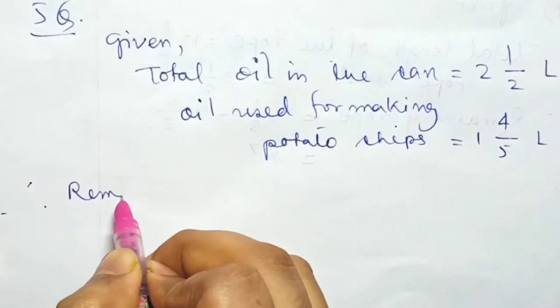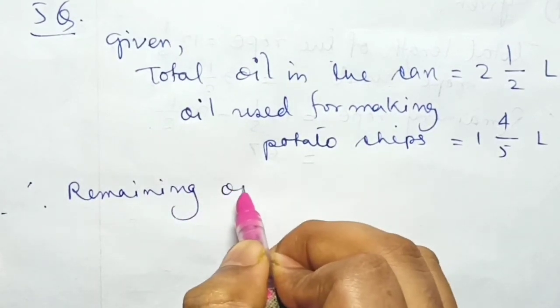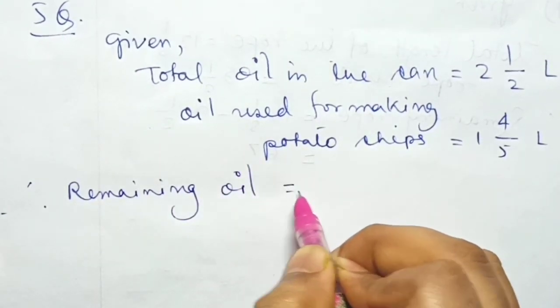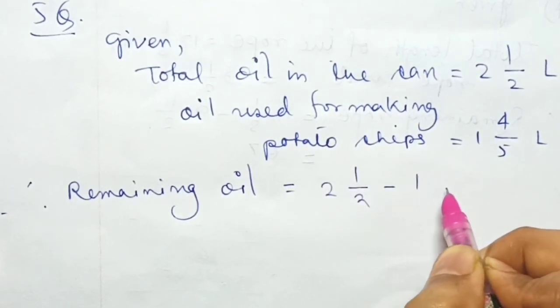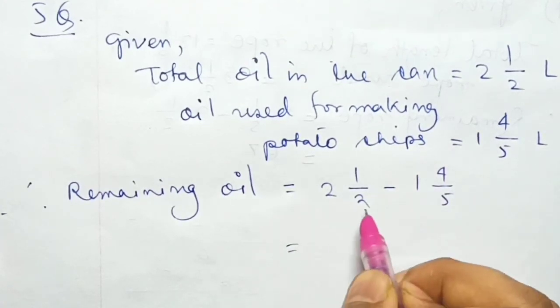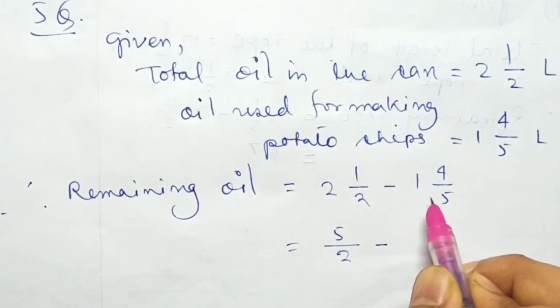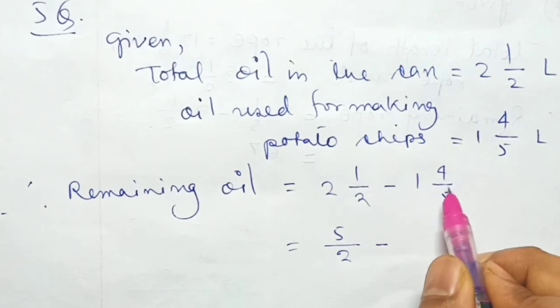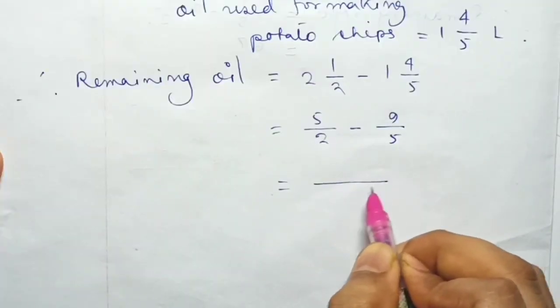Converting: 2 and 1/2 = (2×2 + 1)/2 = 5/2. And 1 and 4/5 = (1×5 + 4)/5 = 9/5. LCM of 2 and 5 is 10.